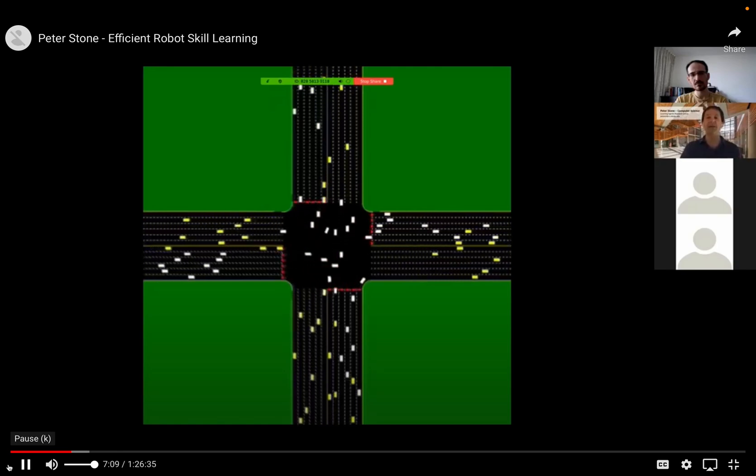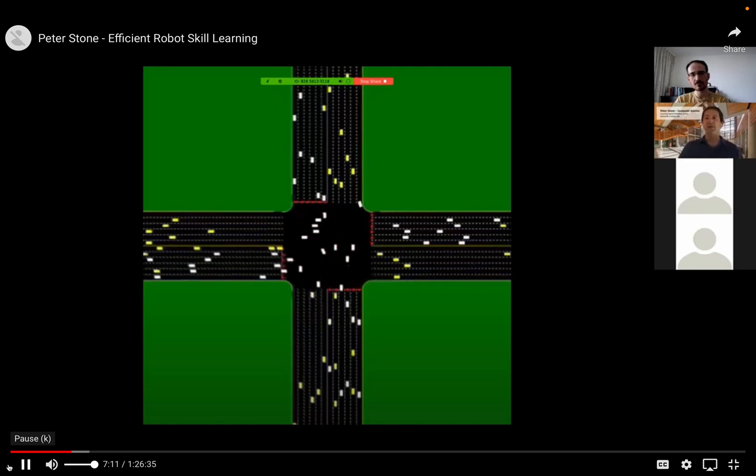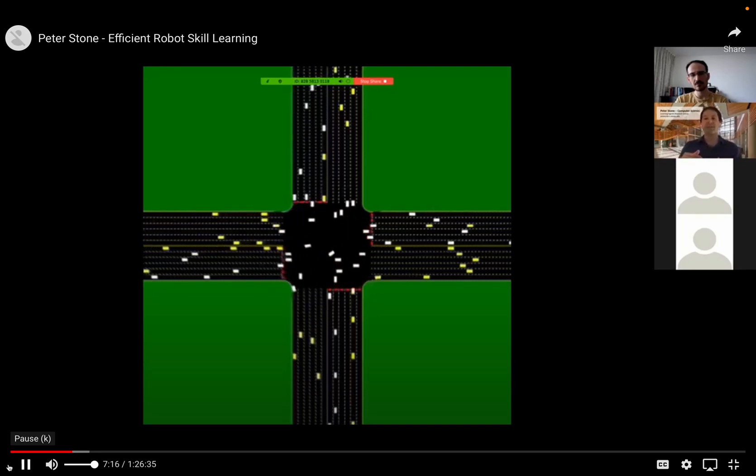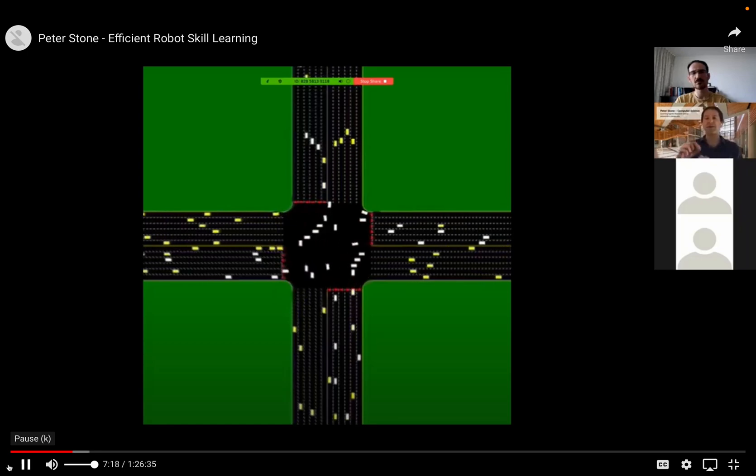Thinking about would we still need traffic signals or stop signs at intersections, or could we have the cars call ahead for a reservation in space-time? So that's what's happening here. The cars that are white have a reservation in space-time through the intersection. The ones that are yellow don't, so they have to stop.